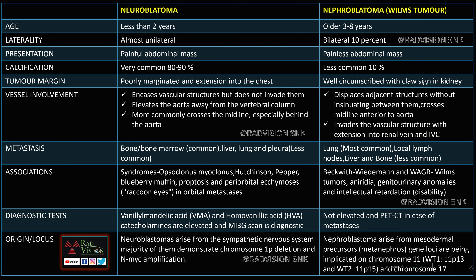Now differentiating neuroblastoma from nephroblastoma — the important gist of this lecture. Neuroblastoma is common under 2 years; nephroblastoma is older, greater than 3 years, peak between 3 to 8 years. Neuroblastoma is always unilateral; nephroblastoma is bilateral in 10% of cases. Neuroblastoma presents as a painful abdominal mass whereas nephroblastoma is painless, often detected late. Calcifications are very common in neuroblastoma (80–90%) and less common in nephroblastoma. Tumor margins are poorly marginated in neuroblastoma with extension into the chest; nephroblastoma is well-circumscribed with a claw sign.